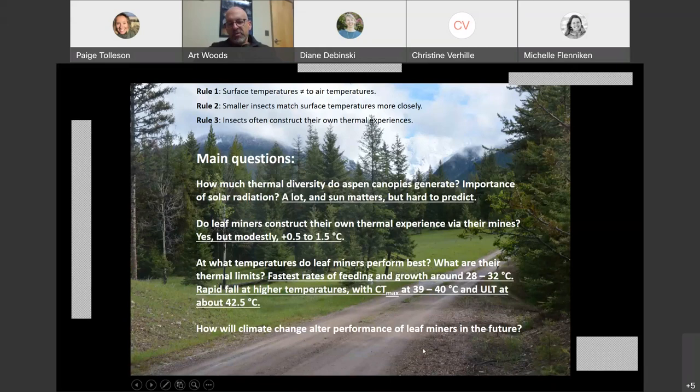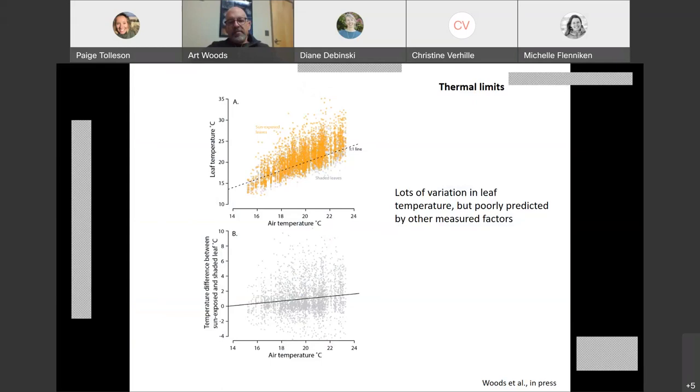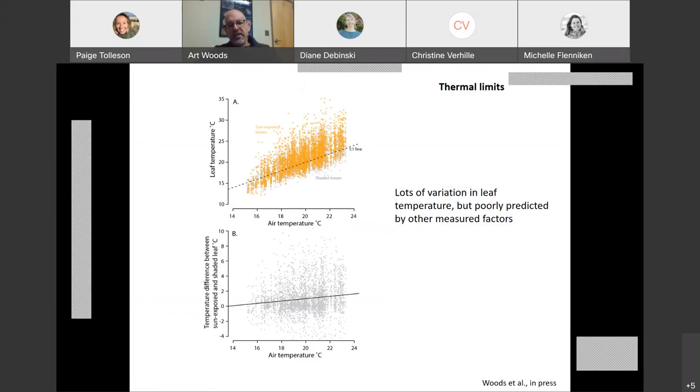Last thing, how will climate change alter the performance of leaf miners in the future? There's maybe two broad things to say here. One is that look at the temperatures that we actually measured on the leaves compared to those temperatures I just showed you for the optimal temperature and the upper lethal temperature. This is for a single experiment in the month of May. The temperatures are quite low. The leaf temperatures are between about 15 and up to 30 with just a few that are a little bit warmer than that. That implies that climate warming may actually accelerate the larval feeding and growth without really incurring that much risk. The problem is that this is only just a single two week period in a single May, in one year.